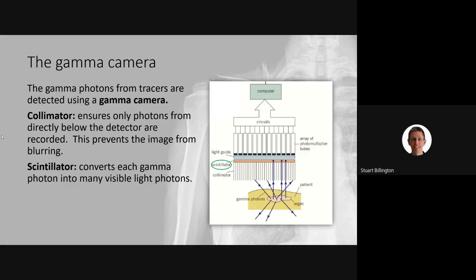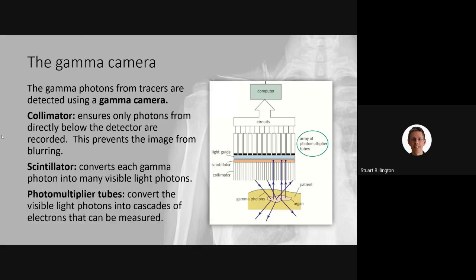The visible light photons from the scintillator travel in all directions, so a second collimating structure - a light guide, often using fiber optic cabling - directs them to the photomultiplier tubes. The photomultiplier tube is the core device that detects individual photons, converting them into an electrical signal, essentially answering how a camera turns a photon of light into an electrical signal.